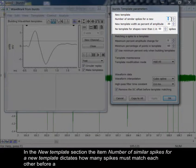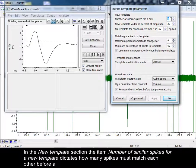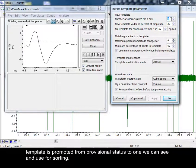In the New Template section, the item number of similar spikes for a new template dictates how many spikes must match each other before a template is promoted from provisional status to one we can see and use for sorting.